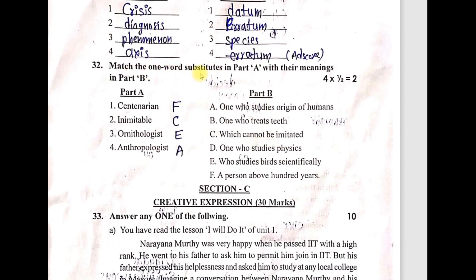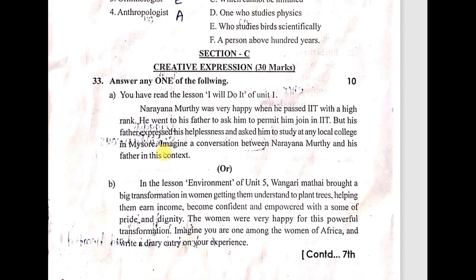Question 32 — match one-word substitutes. Centenarian — right answer F — a person above 100 years. Inimitable — right answer C — which cannot be imitated. Ornithologist — ornithology is the study of birds — right answer E — one who studies birds scientifically. Anthropologist — one who studies the origin of humans. That is called anthropologist.